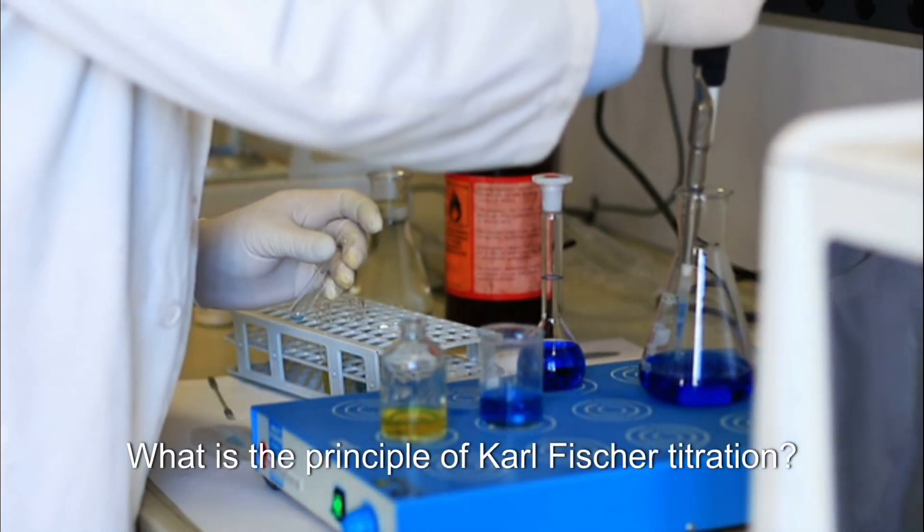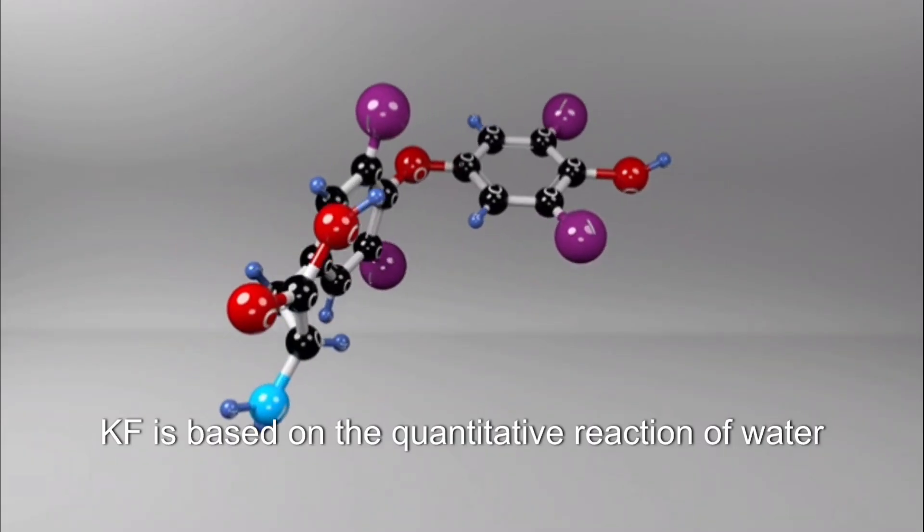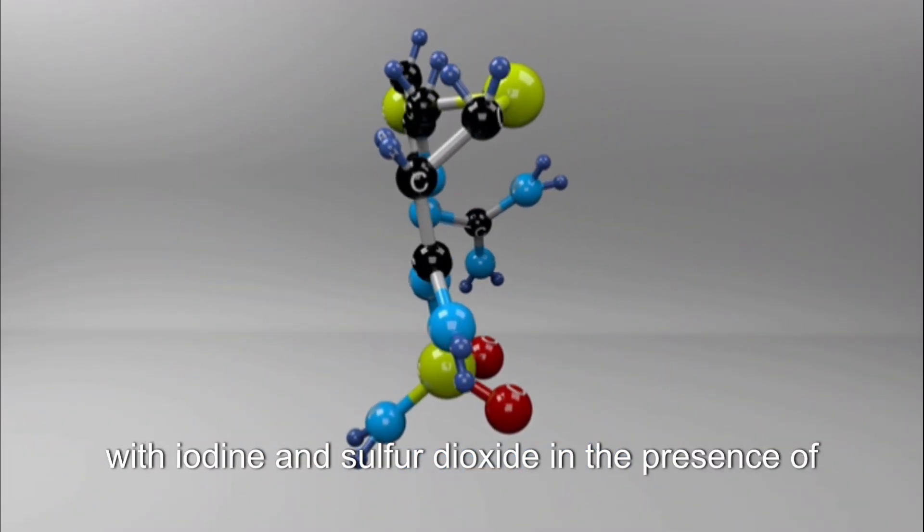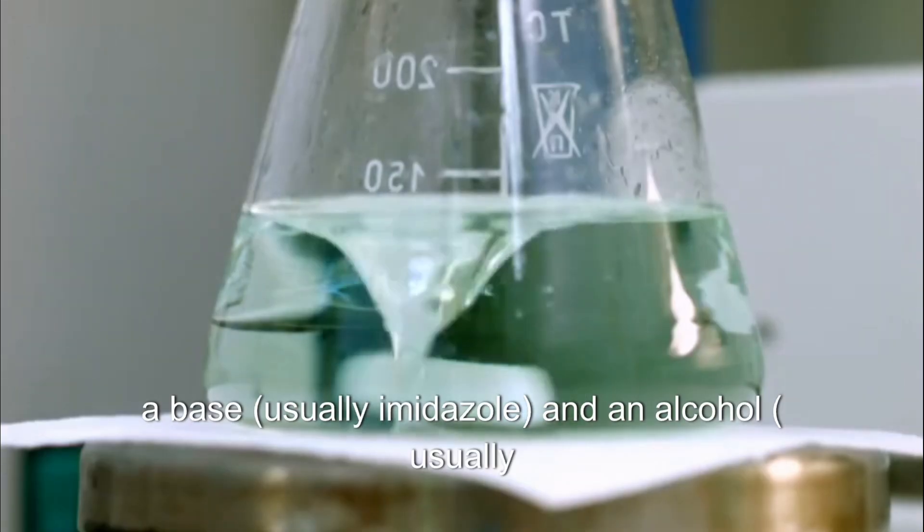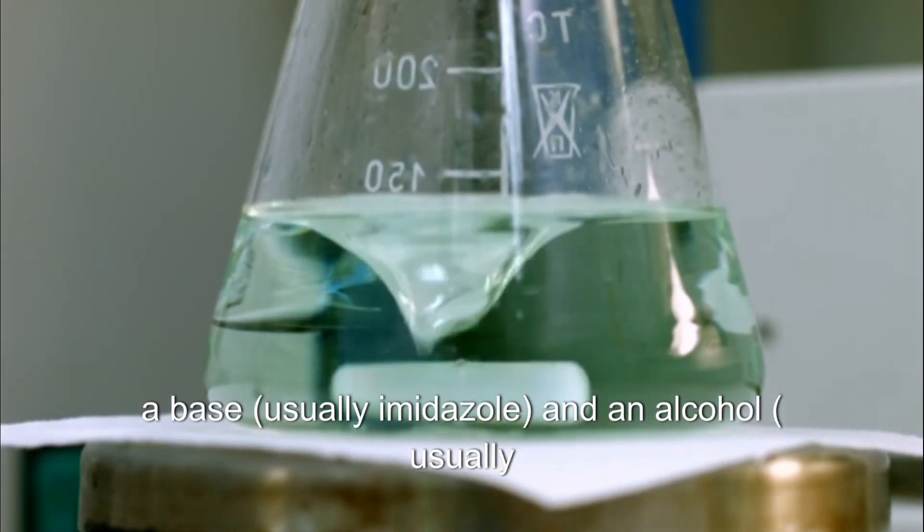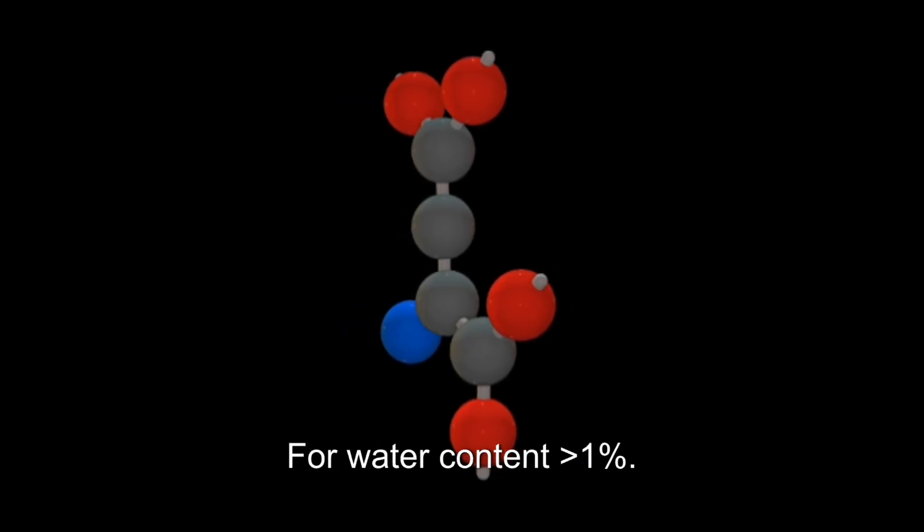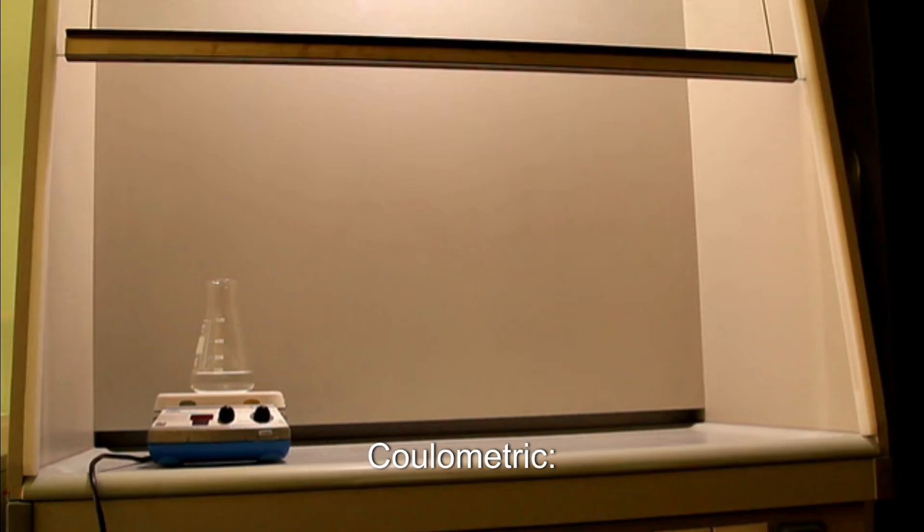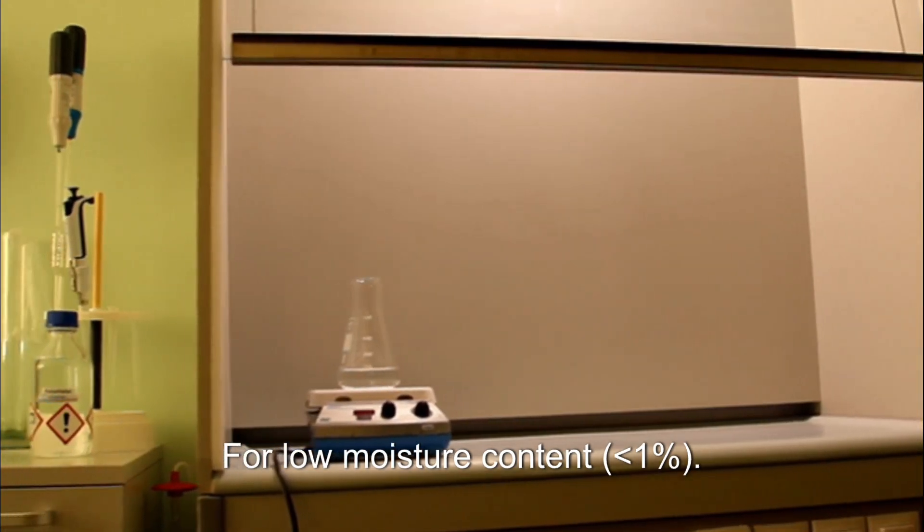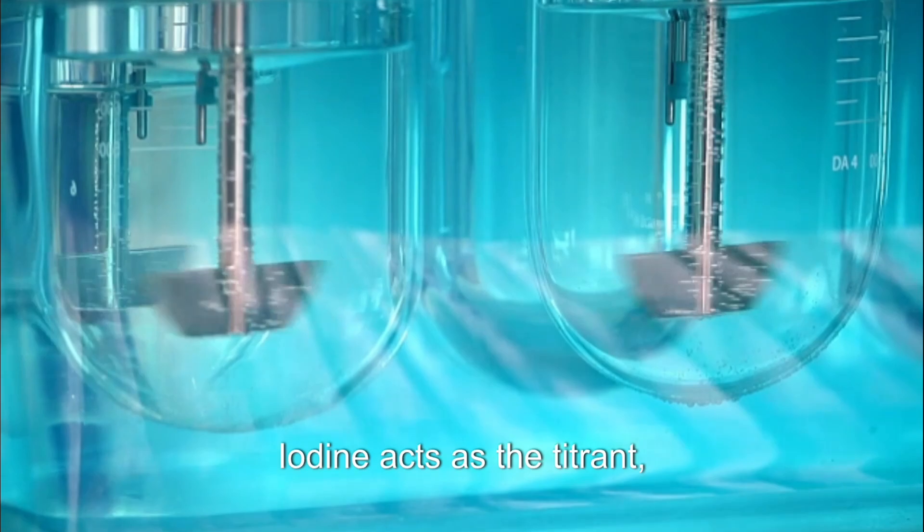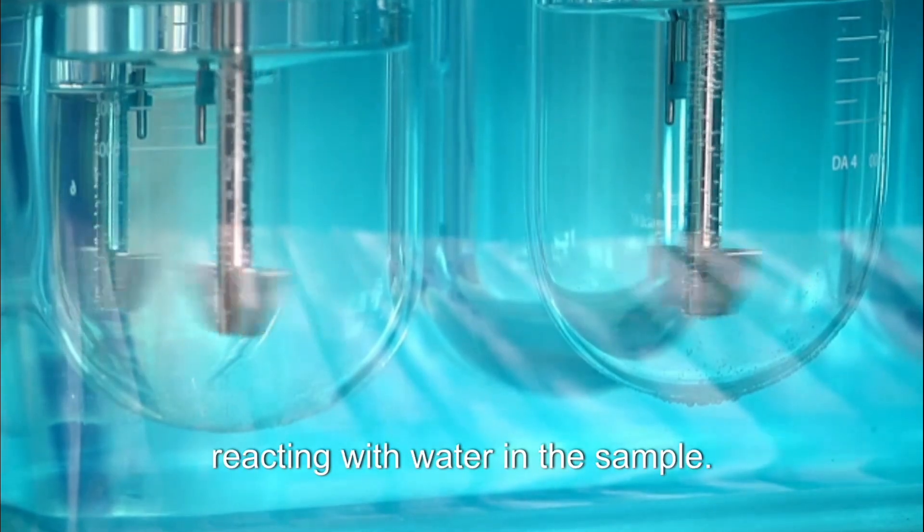What is the principle of Carl Fischer titration? KF is based on the quantitative reaction of water with iodine and sulfur dioxide in the presence of a base, usually imidazole, and an alcohol, usually methanol. What are the types of Carl Fischer titration? Volumetric for water content greater than 1%, coulometric for low moisture content less than 1%. Which chemical is used as a titrant in KF titration? Iodine acts as the titrant reacting with water in the sample.